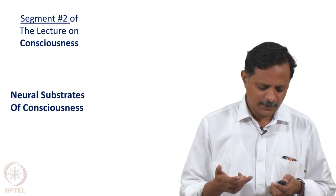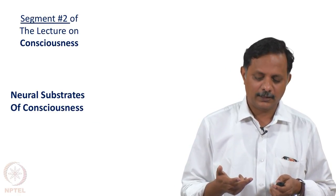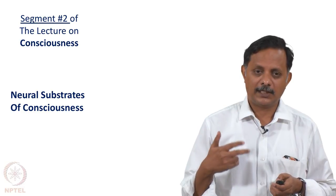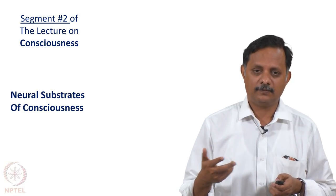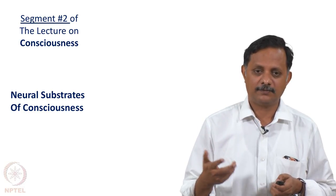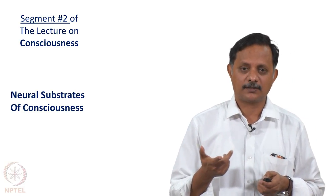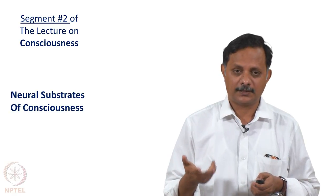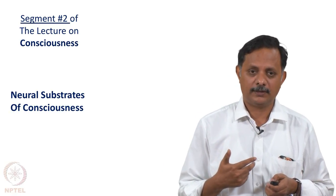This segment we now look at neural substrates — what happens in the brain when this kind of variation in consciousness or conscious interpretations of stimuli occur.